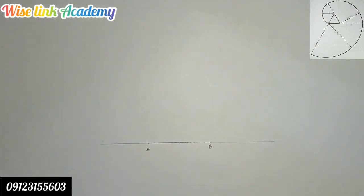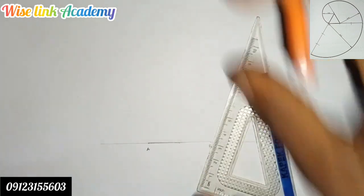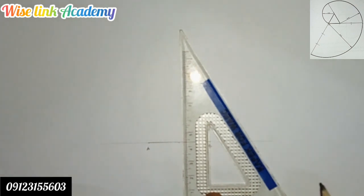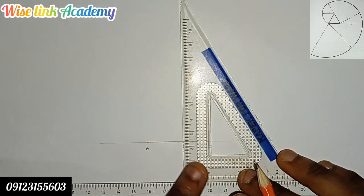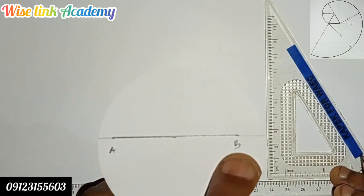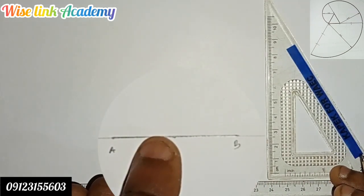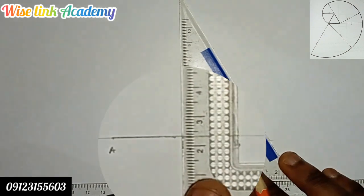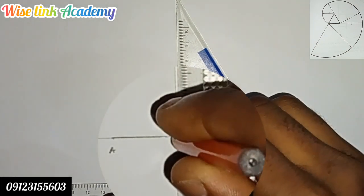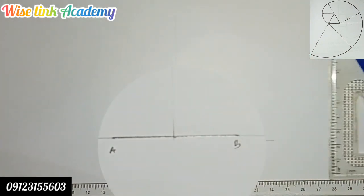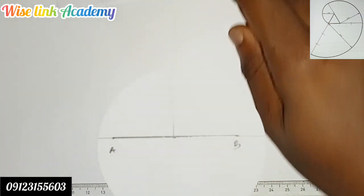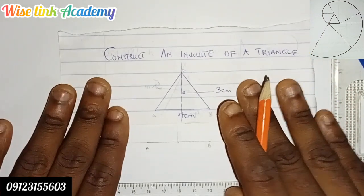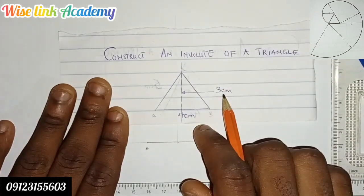This is the middle point. On this middle point, I'll project a line upward. From this line, I need to measure a length of 3 centimeters. Let me get my ruler and measure.